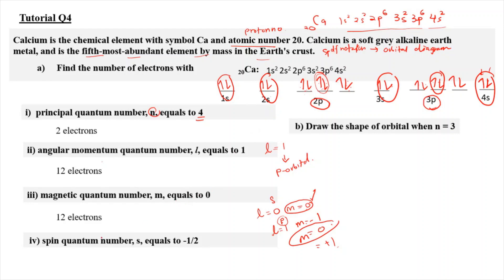For question number 4, the spin quantum number s equals negative half. You can assume negative half to be the downward arrow in the orbital diagram. Counting all the downward arrows in the orbital diagram, we get 10 electrons that have s equal to negative half.